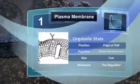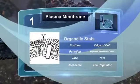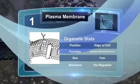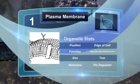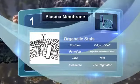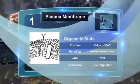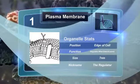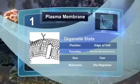The plasma membrane is made of a bilayer of phospholipids. The plasma membrane regulates what enters or leaves the cell through diffusion or osmosis.